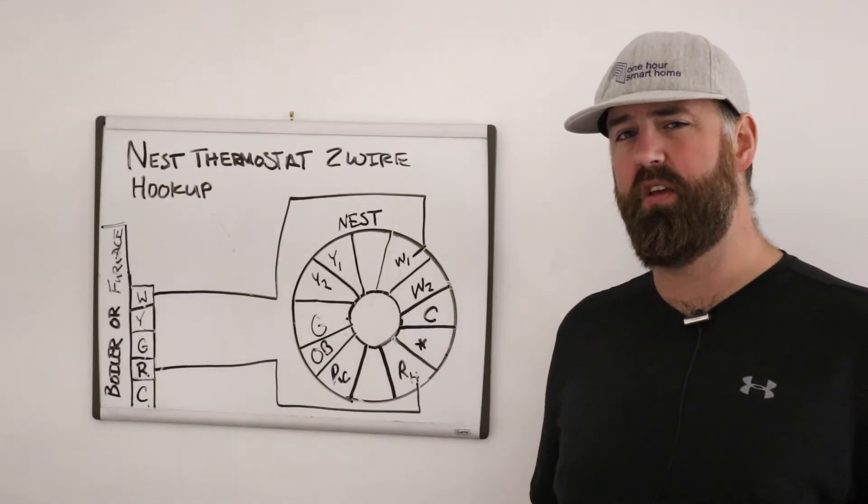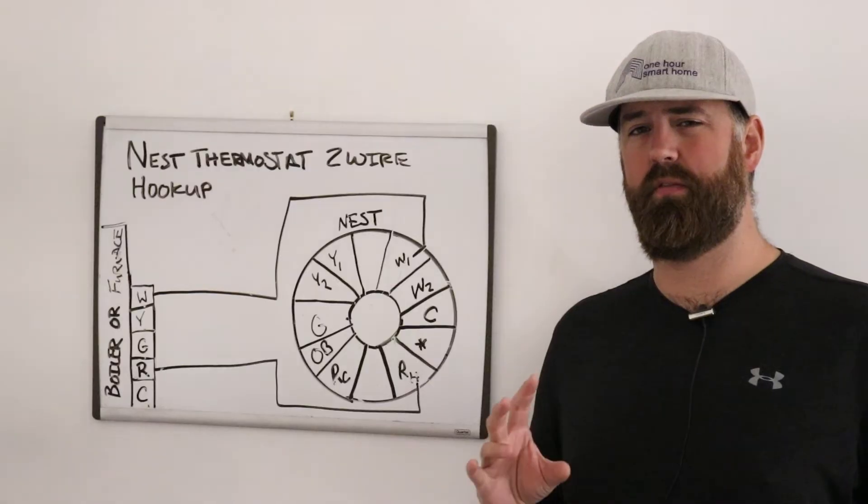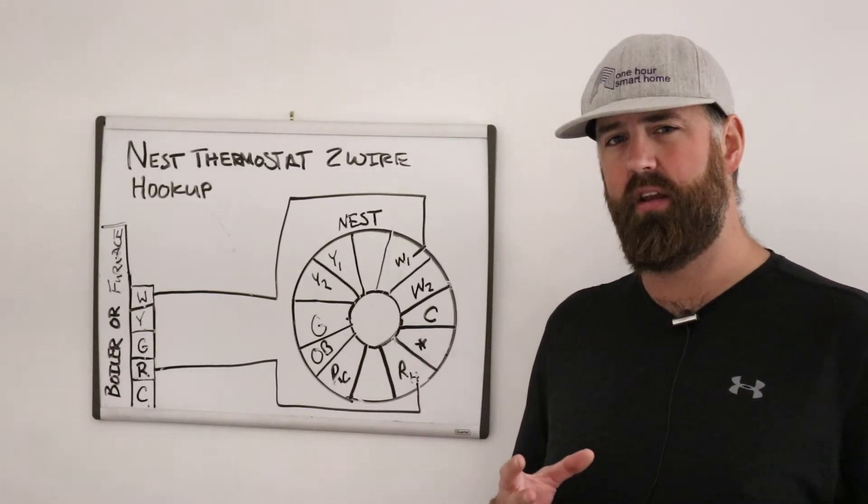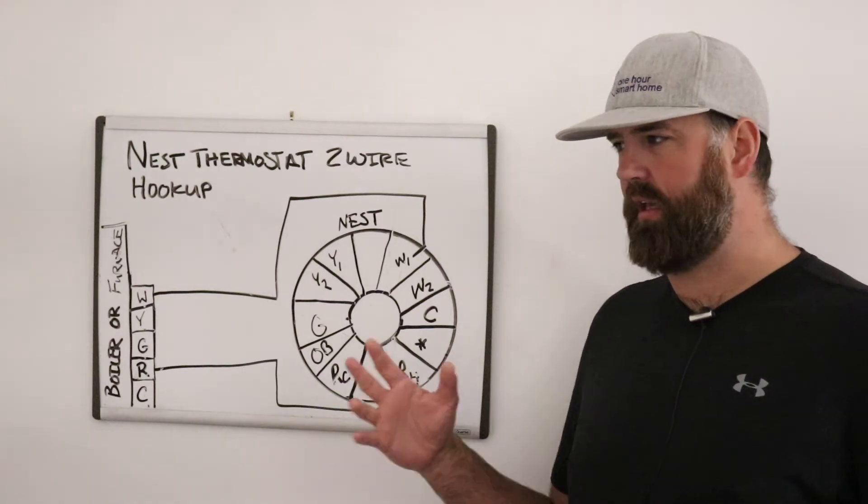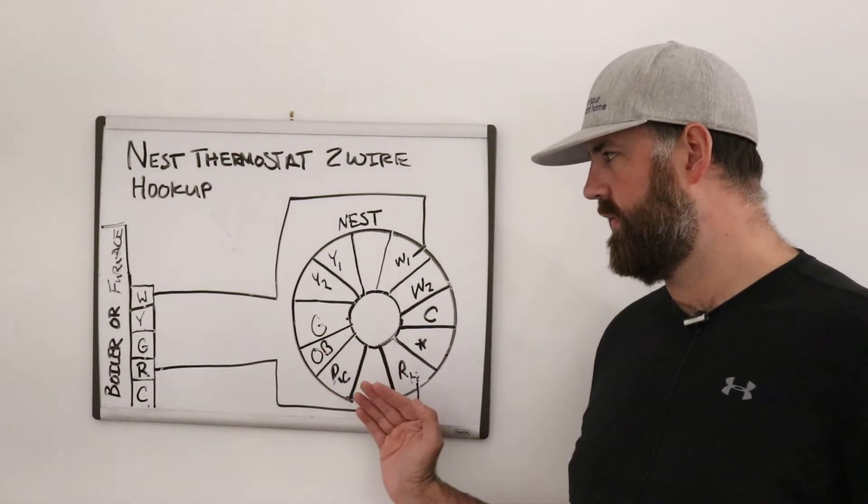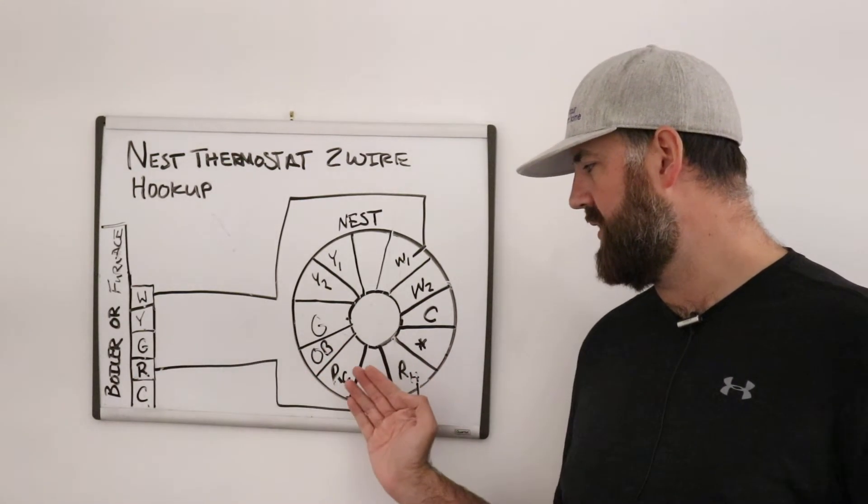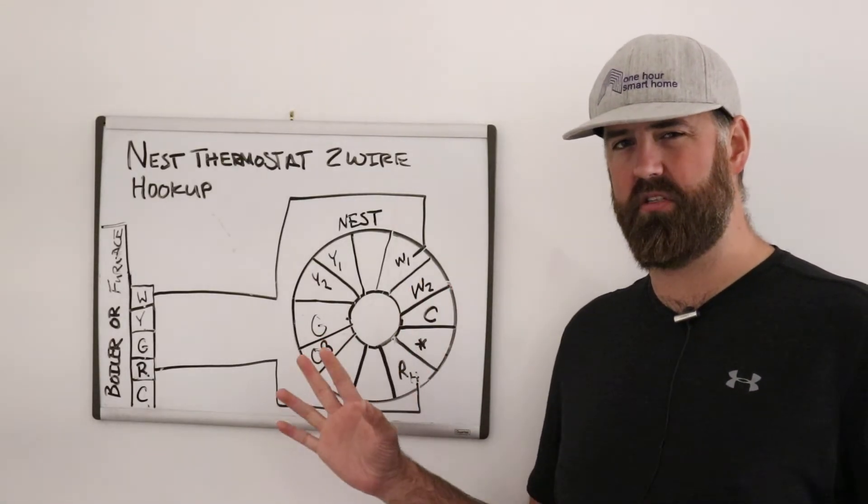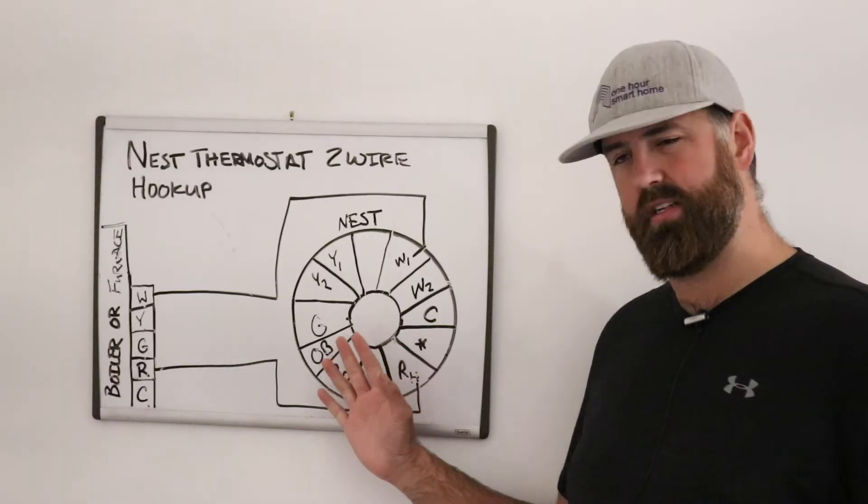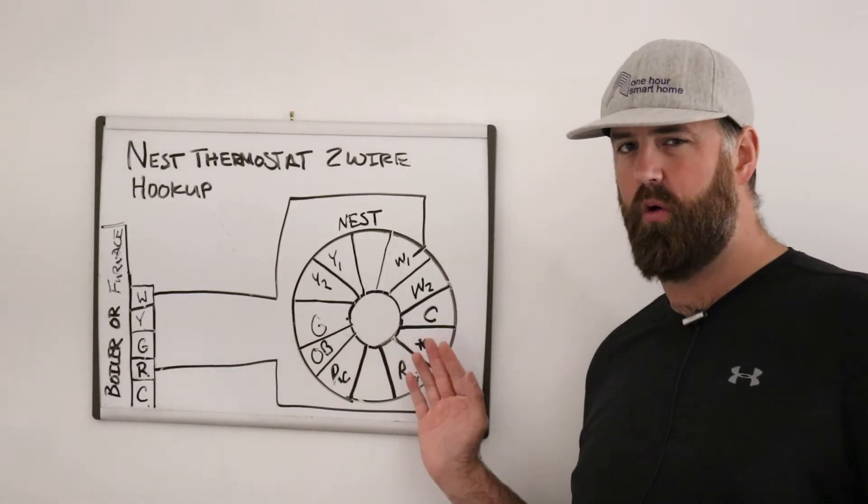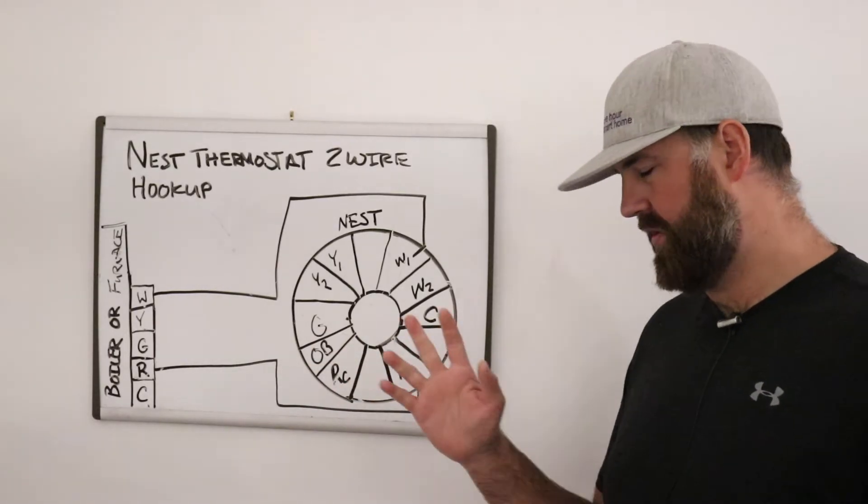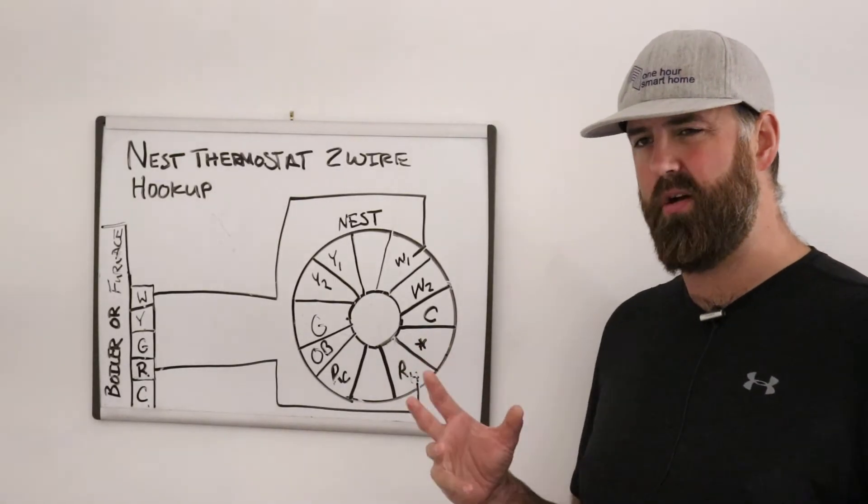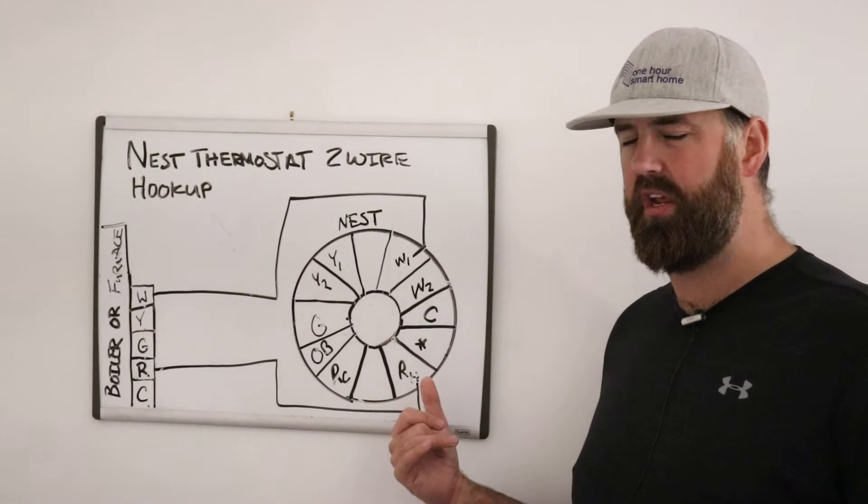O-B, that is for heat pumps. And that controls the reversing valve on the heat pump. RC, like we said, that is power. It can be used to power from your boiler or from your furnace. But the convention is meant for power from a cooling system. But with the case of the nest, you can put the power in RC or RH, it doesn't matter when you have just a two wire system. RH, that's power again. That's just power input. RH stands for heating power.